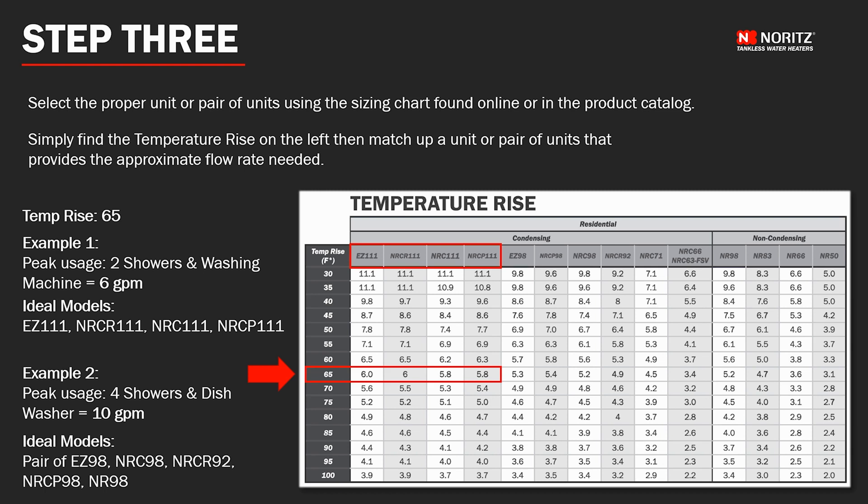For example 2 with the higher flow rate, you can see that a pair of the 98 series and even the NRCR 92 would provide the needed 10 gallons per minute.